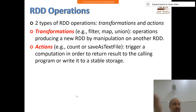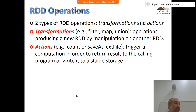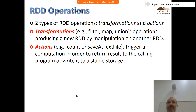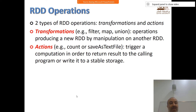An action either returns back a value or a result to the driver program, or writes the output to storage. That's the difference between transformation and action: transformations create new RDDs, while actions don't create new RDDs - they return results to the user or to the driver program that runs all of these things.